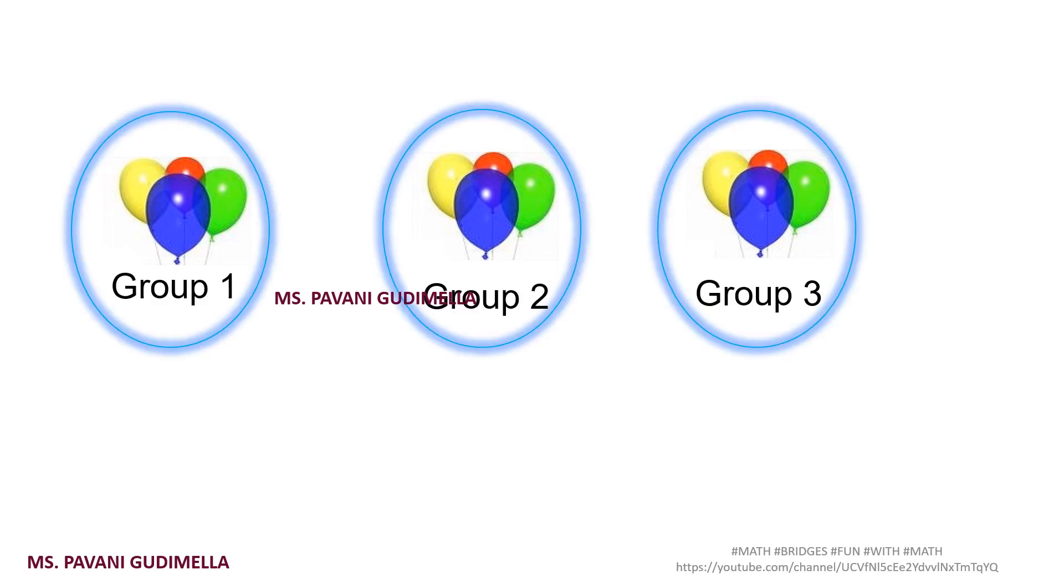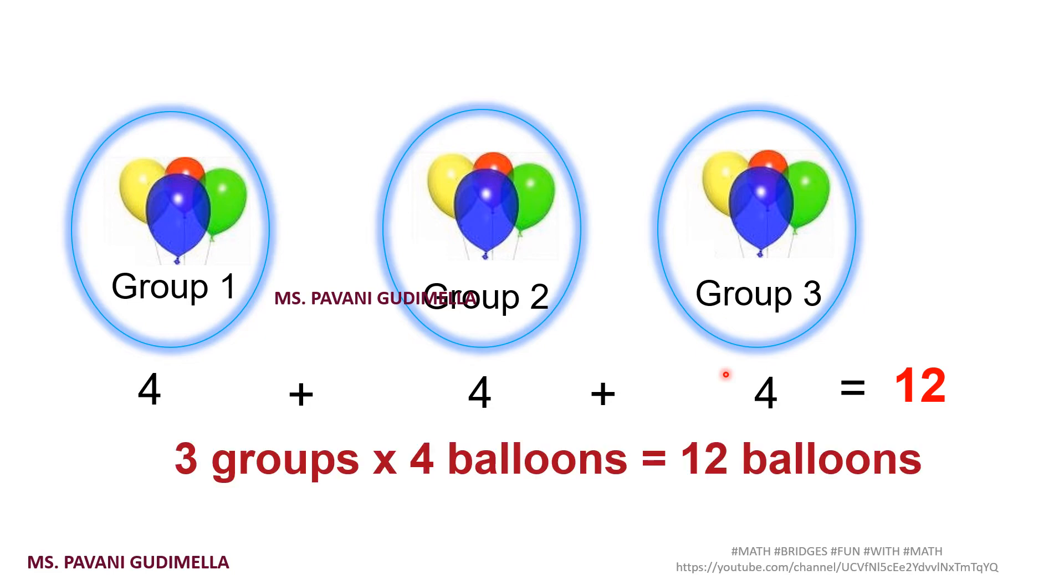The same model. Let us see with one more example. You can see here 4 balloons are there. We will group it first. First group, second group, and third group. We got 3 groups of 4 balloons. That means 4 plus 4 plus 4, which equals 12 balloons total. This means repeated addition.